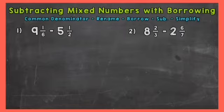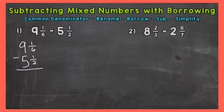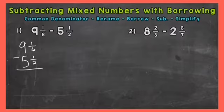So let's jump into number one, where we have nine and one-sixth minus five and a half. The first thing that I like to do is set these problems up vertically, so up and down: nine and one-sixth minus five and a half, with the fractions lined up and the whole numbers lined up. So can we subtract this problem as is? No, because the fractional parts do not have common denominators. So we need to find a common denominator and rename. The least common denominator for six and two is going to be six.